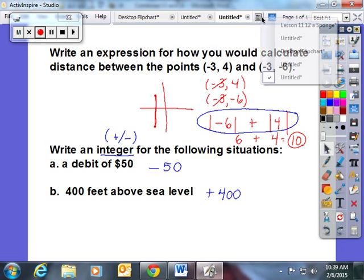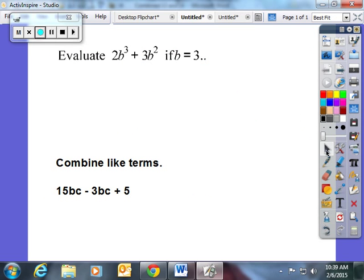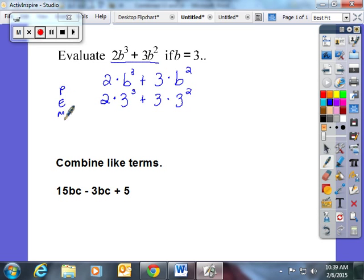Last one we're going to go over today is evaluating. As your math coach, the very first thing I would like you to do is expand your expression by including a dot for multiplication. Now you can substitute in your value for B. And now you can follow the order of operations. I'm going to do my exponents first. Since I don't have parentheses. 3 times 3 is 9. 9 times 3 is 27.